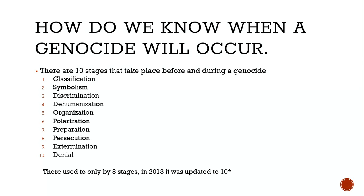How could an entire group of people be targeted if it was done by any group other than the government? If a bunch of people decided to kill a group in Canada, would the government stop them? The answer should be yes. So for something like this to happen, we're seeing it from the top down.